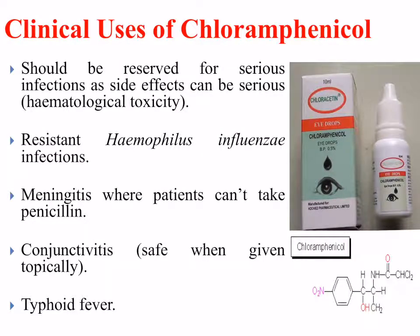The clinical uses of chloramphenicol are for serious infections, as the side effects can be serious — including the haematological toxicity of pancytopenia. They can be used for resistant Haemophilus influenzae infections, as they do kill this particular bacterium, and also in meningitis where patients can't take penicillin. They can be given safely to some external organs, such as the eye, so for conjunctivitis they can be safe when given topically, as indicated by the diagram showing eye drops.